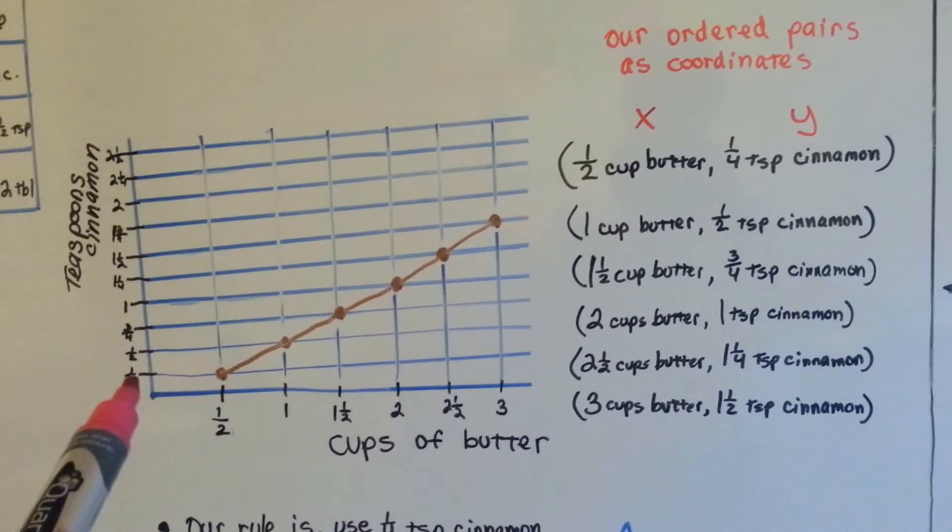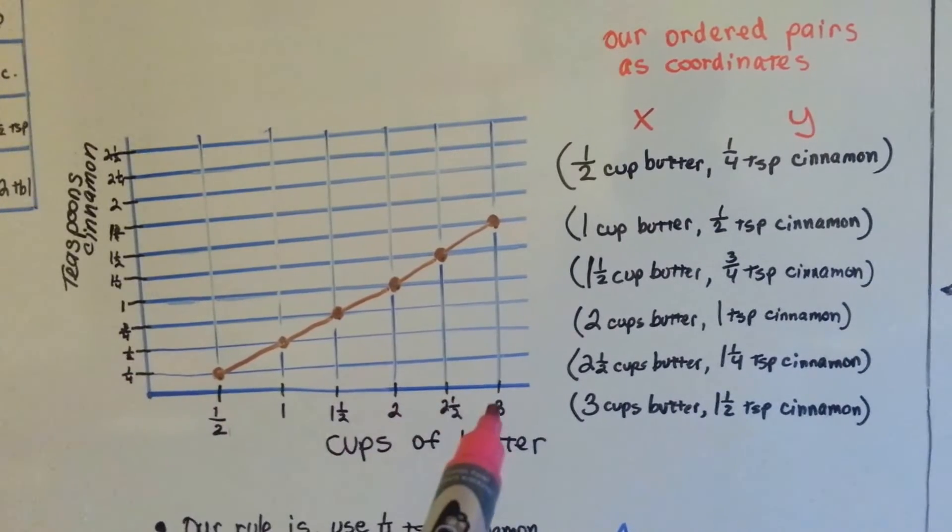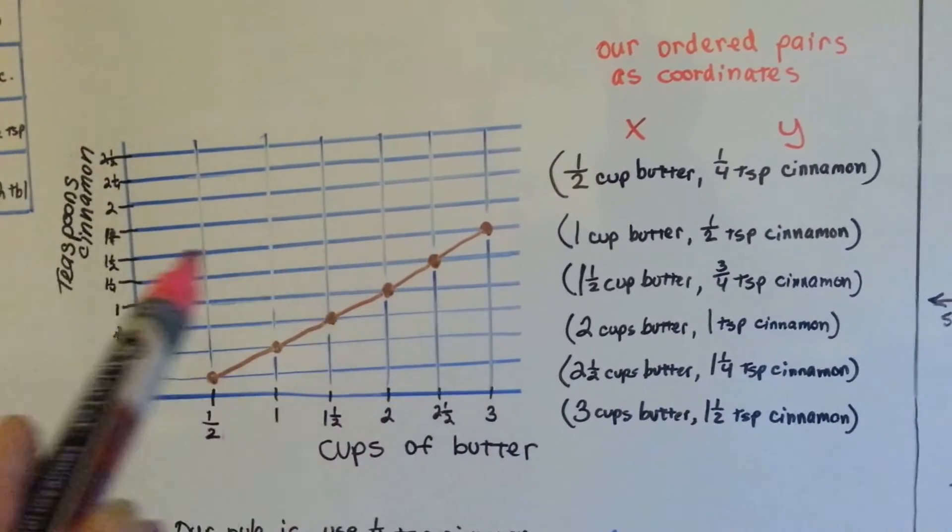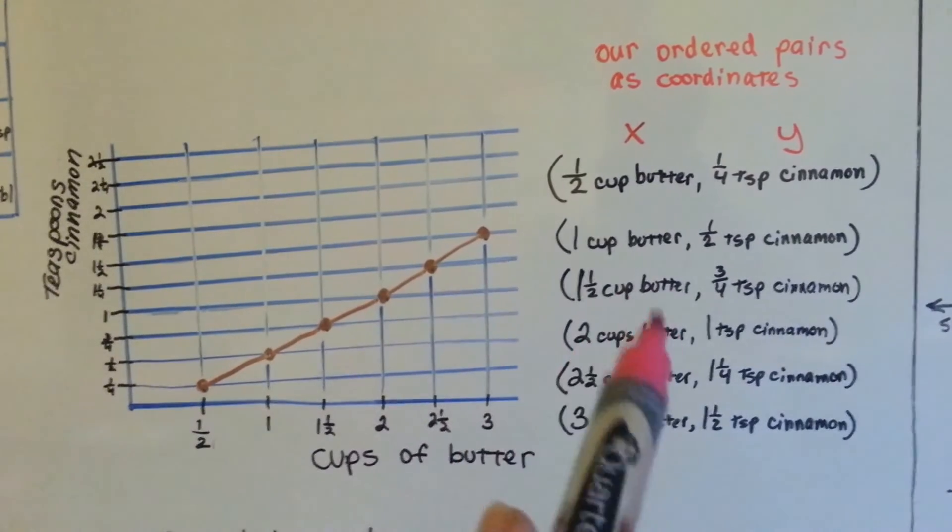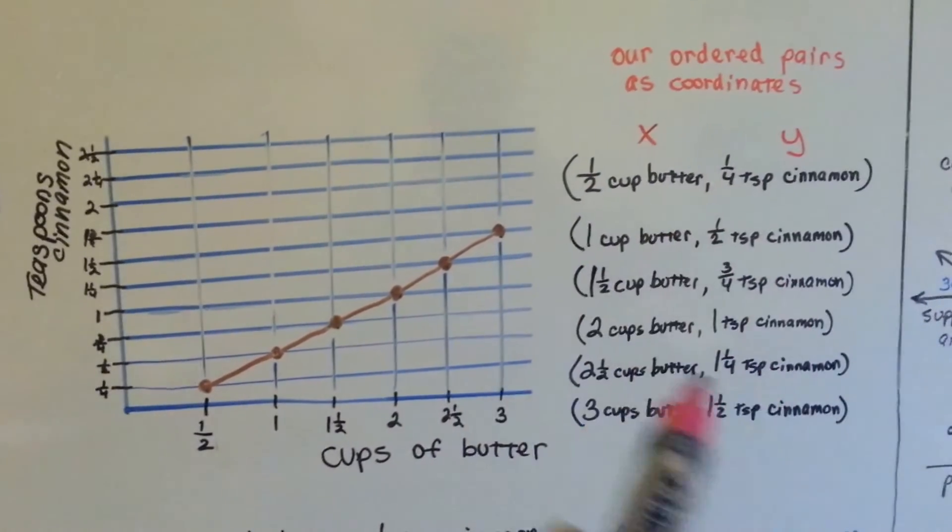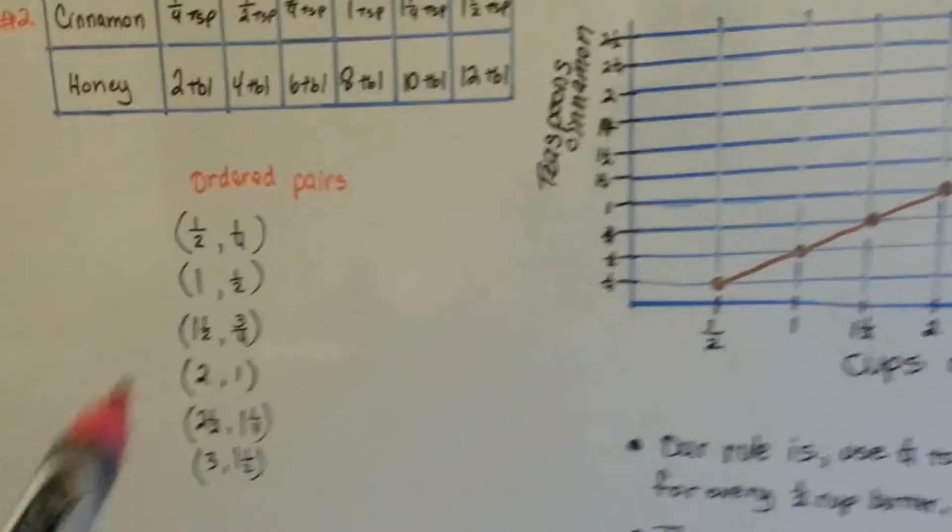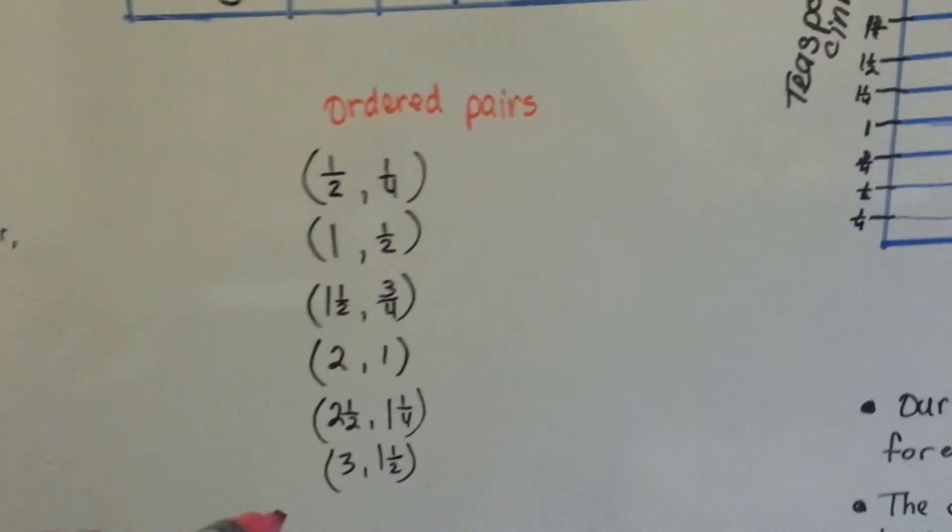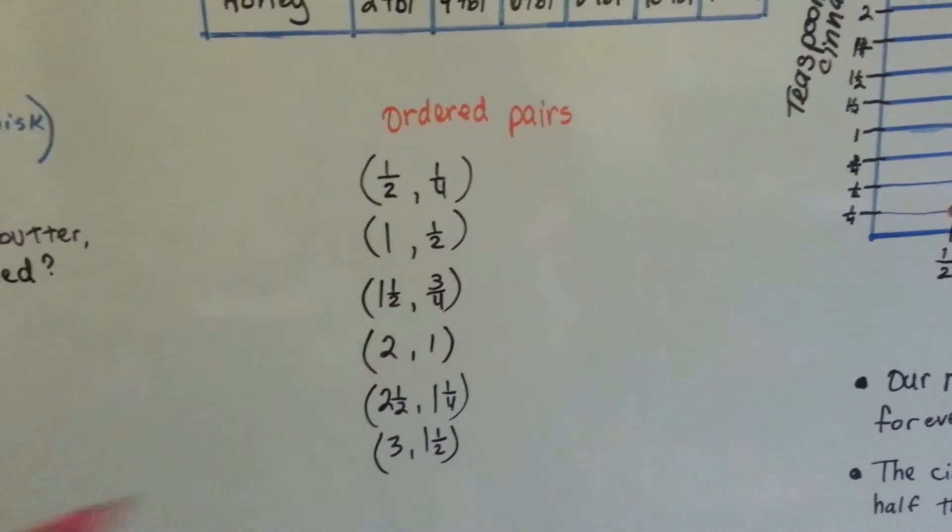A half cup of butter would be a quarter teaspoon of cinnamon. Three cups of butter would be one and a half teaspoons of cinnamon. This is what they are recipe-wise, but this is what our ordered pairs would look like mathematically. That's the X and that's the Y.